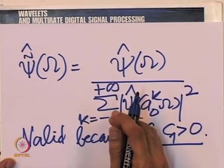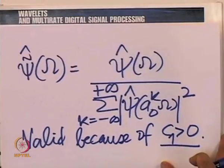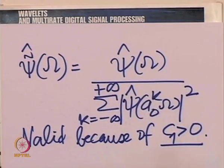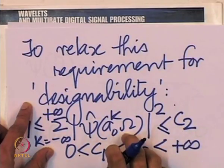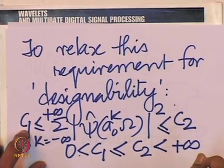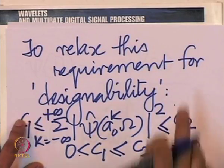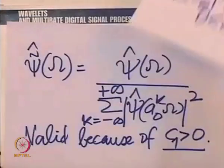We will show that if psi obeys the bounded sum requirement, then psi is admissible. We use C1 to define psi-tilde and C2 to prove admissibility. Once we have ensured the bounds, we also have admissibility. Let us prove that — by admissible, we mean the admissibility integral must be finite.